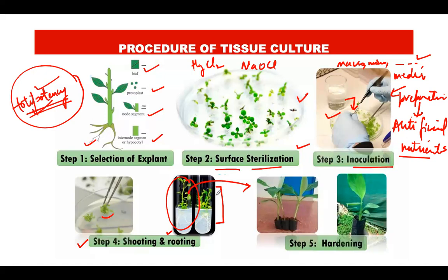Hardening is the process of transferring the plantlet from laboratory conditions to natural conditions in soil, where it can develop into a fully grown, healthy adult plant. You cannot grow a fully mature plant entirely in the lab; the lab phase ensures the plant remains disease-free and has the desired traits introduced. For hardening, the plantlet is transferred to a greenhouse — an enclosed area with monitored temperature, humidity, water, and other growth parameters.